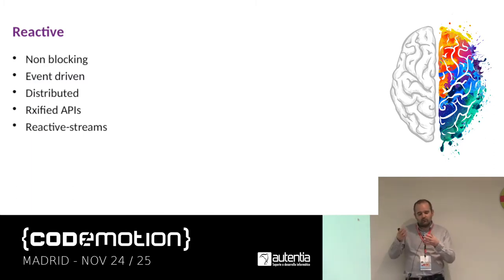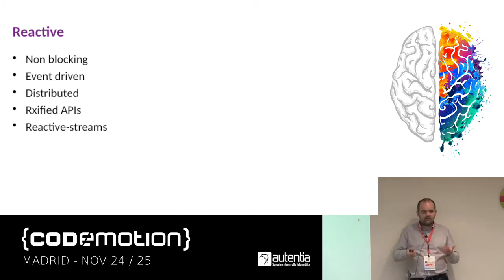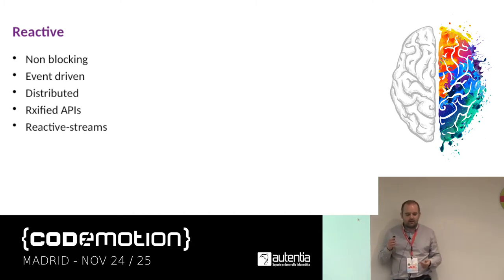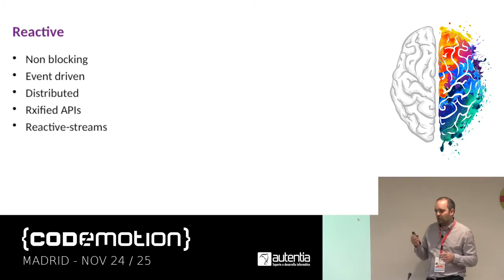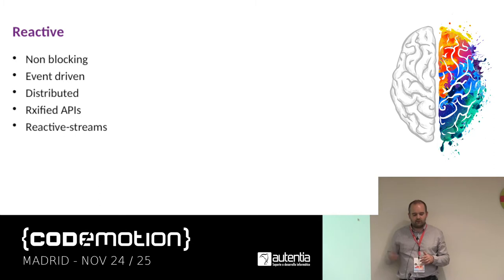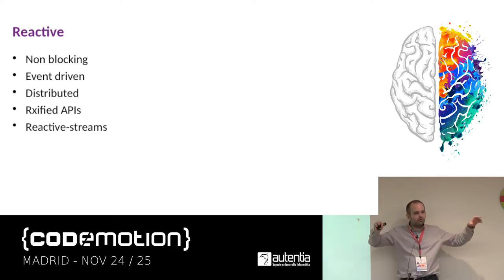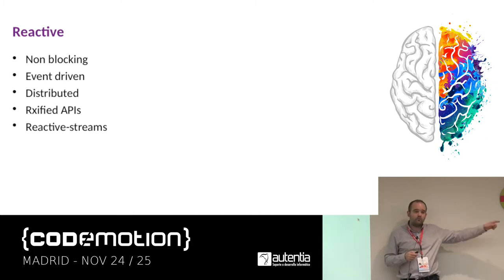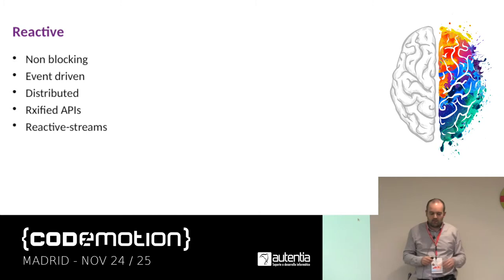Vert.x is distributed by nature. We have something called the event bus, which allows you to put your Vert.x code on different machines and even in the browser. We have RxJava APIs — instead of callbacks, you can say, for example, 'Rx bind this HTTP server' and get a Completable, Single, or Observable instead. It's also reactive-streams compliant, dealing with back pressure.